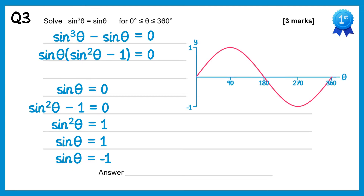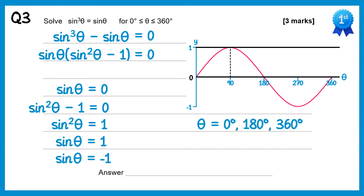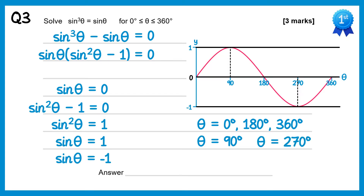Looking at the graph of sinθ: a horizontal line at 0 gives three solutions — 0, 180 and 360. A line at 1 gives only one solution: 90 degrees. And a line at negative 1 also gives just one solution at 270 degrees. So there are five solutions altogether: 0, 90, 180, 270 and 360.